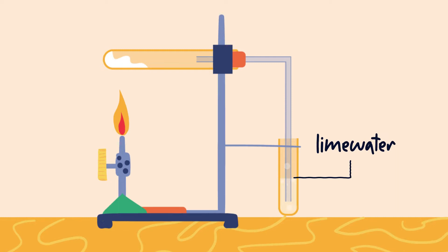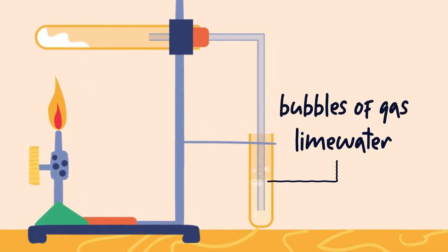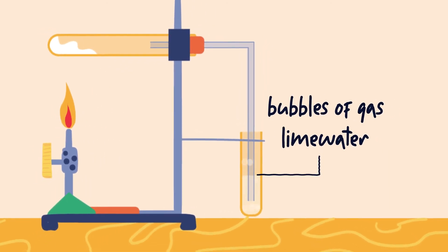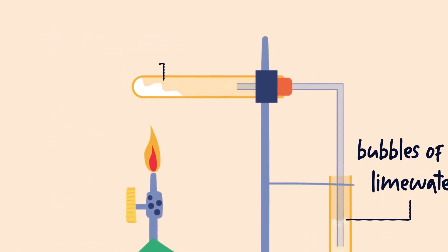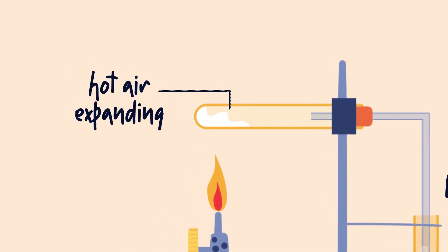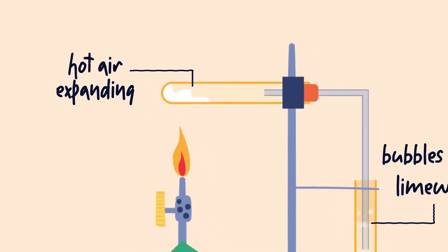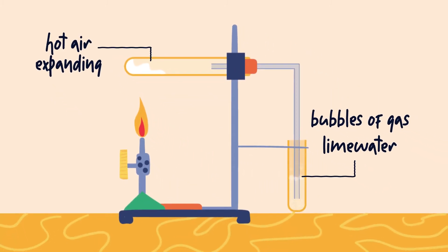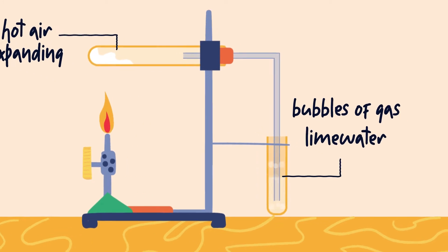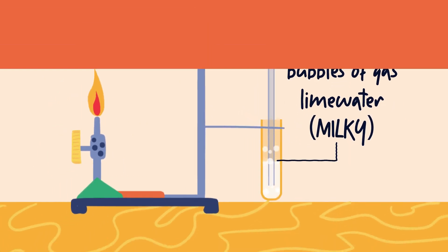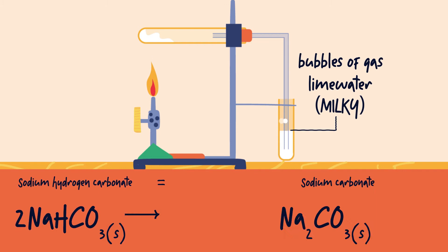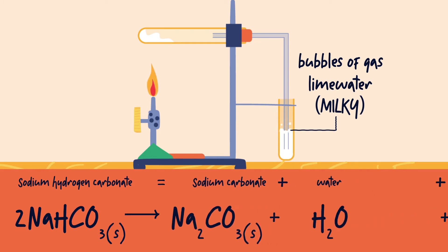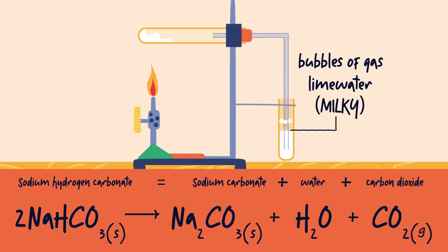On gentle heating, bubbles of gas can be seen in the limewater. This is initially due to hot air expanding in the test tube, but soon a steady stream of bubbles is seen that turn the clear limewater milky. This shows that carbon dioxide has been made as the hot sodium hydrogen carbonate decomposes.